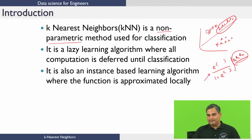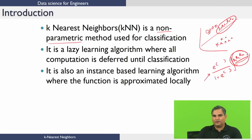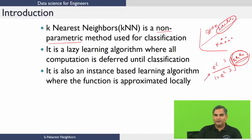K-Nearest Neighbor is also called a lazy learning algorithm where all the computation is deferred until classification. For logistic regression, you have to do work to get parameters before you can classify any test data point — without those parameters you can never classify test data. However, in K-Nearest Neighbor, you just give me the data and a test data point and I will classify. No work needs to be done before I am able to classify a test data point.